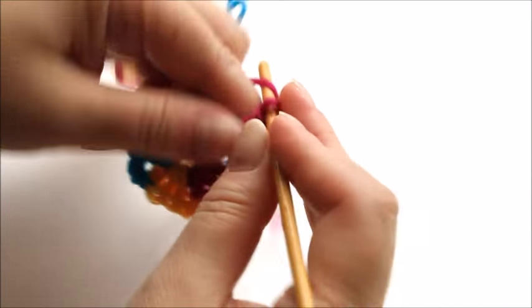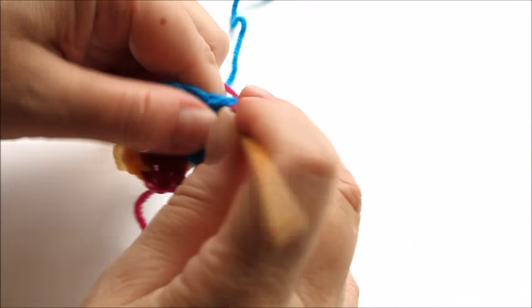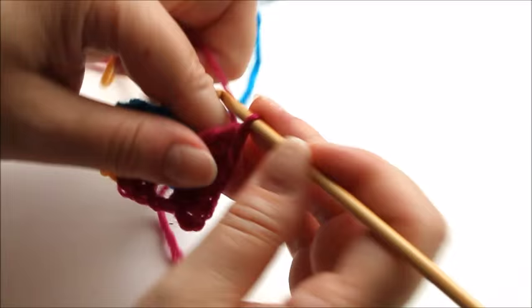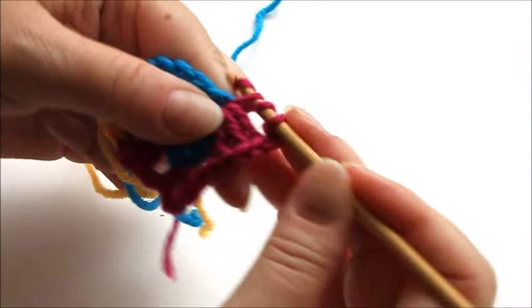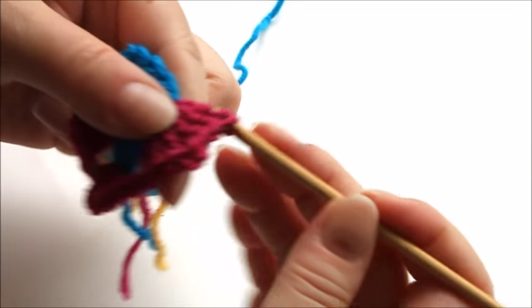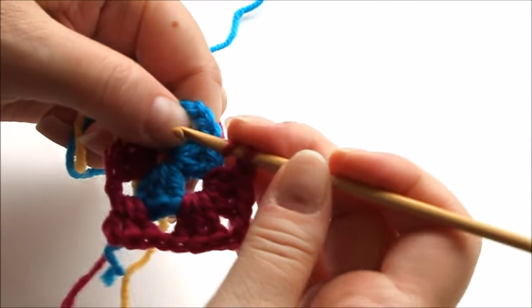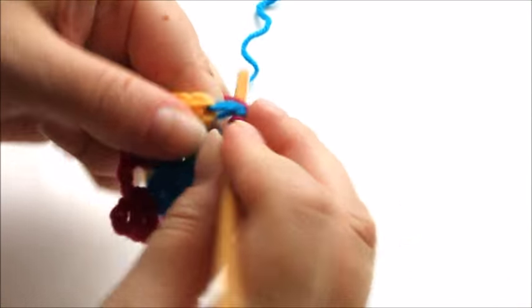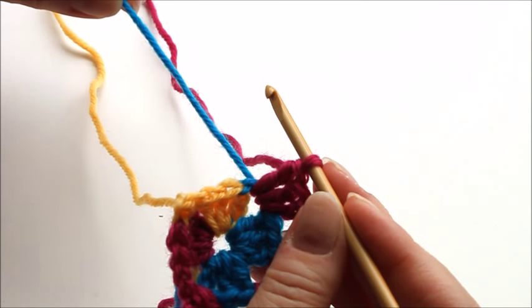So I'm going to chain three, and then I go to the next corner and chain one in between, and here three trebles. Chain two in the other corner and into the same corner the next three trebles. Chain three trebles there. And then I go again to the next corner, chain one, and now three trebles. And now I am in a place here where I can see the yarn from the previous row waiting for me.